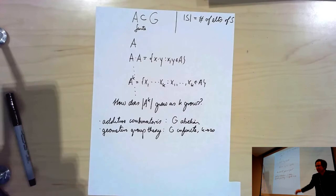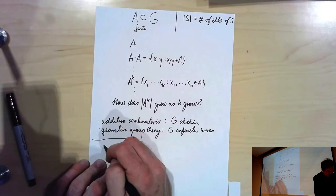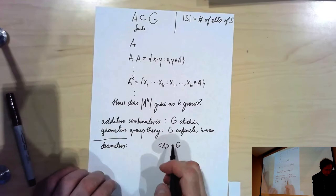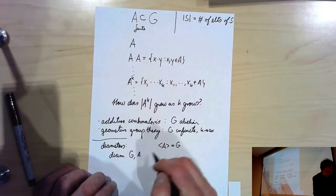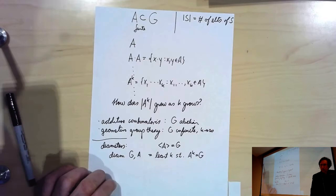But you can ask yourself: how soon does that happen? So I can define, assuming that A generates G — by brackets I mean the group generated by A, and that's G — the diameter of G with respect to A as the least K such that A to the K is G. And for G finite, this is finite.